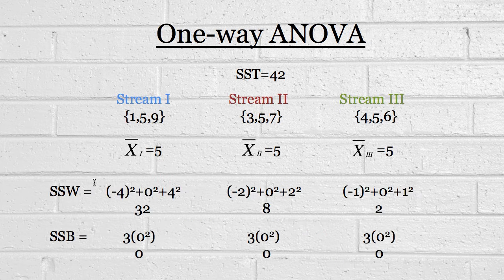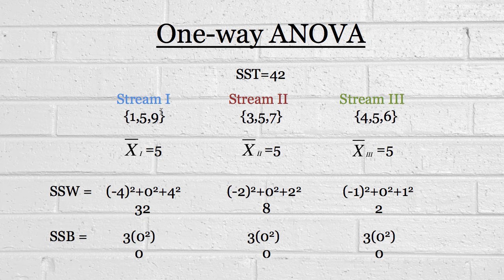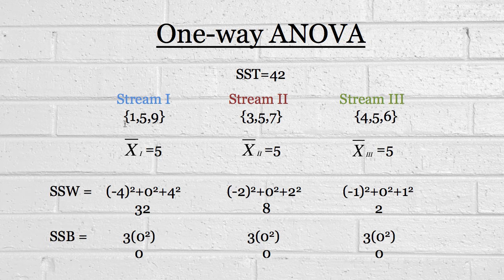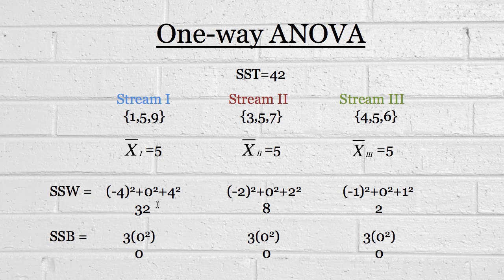The sum of squares within groups basically focuses on the individual streams themselves. So, stream one, we have one, five, and nine. The sum of squares within that group implies that we need to find the mean of that group, which is five. We subtract five from each of the observations. So, one minus five is minus four squared. Five minus five is zero, and we square it. Nine minus five is four, and we square it.